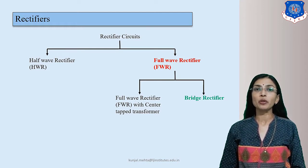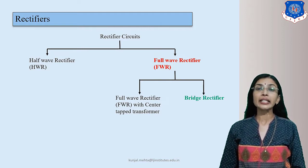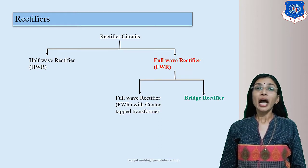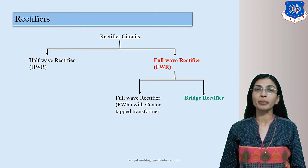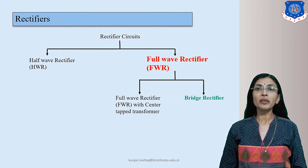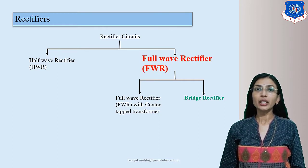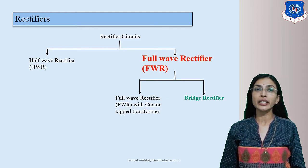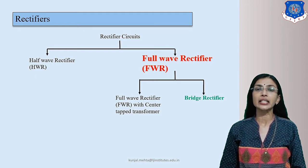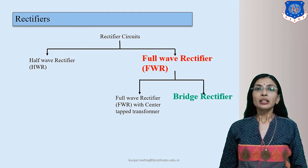We have two main types of rectifier circuits: one is the half wave rectifier and another is the full wave rectifier. The half wave rectifier requires only one diode, which we studied in the previous lecture. The full wave rectifier requires two or four diodes. Full wave rectifier is again classified into two types: center tap full wave rectifier and bridge rectifier.